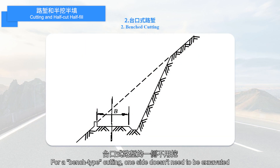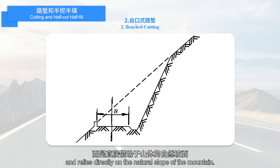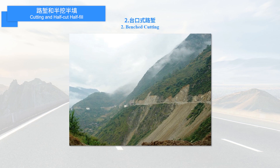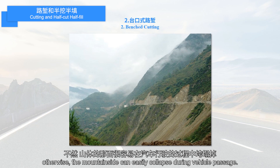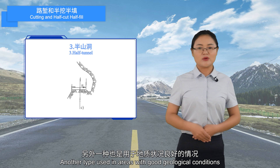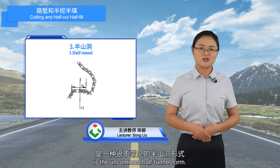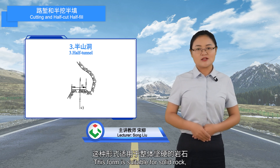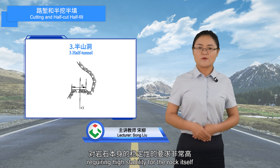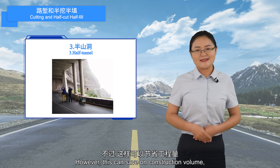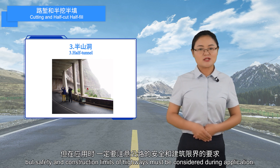For a bench-type cutting, one side doesn't need to be excavated and relies directly on the natural slope of the mountain. Of course, this is suitable for areas with good geological conditions; otherwise, the mountain side can easily collapse during vehicle passage. Another type used in areas with good geological conditions is the uncommon half-tunnel form. This form is suitable for solid rock, requiring high stability for the rock itself and posing challenges for design and construction. However, this can save on construction volume, but safety and construction limits of highways must be considered during application.